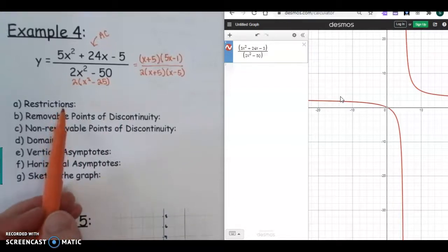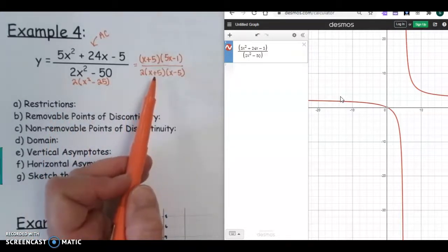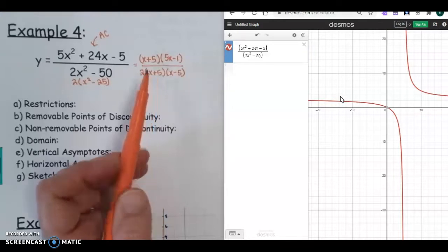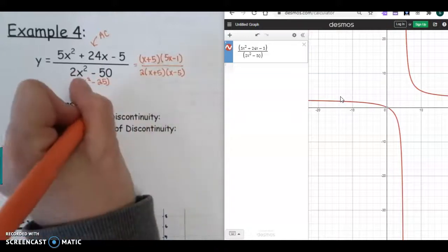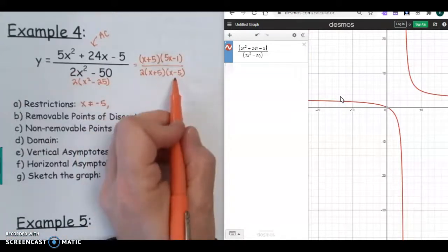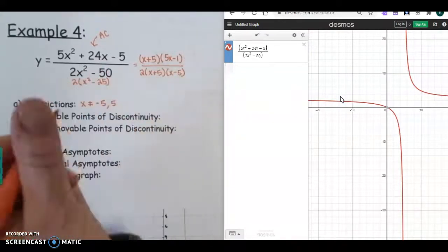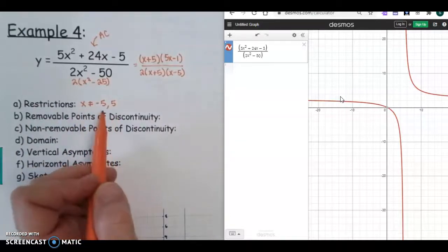We can start thinking about answering all the different questions. So it wants to know the restrictions. If we look at our denominator, I see that X could not equal negative 5, because that would make this be 0, and X could not equal positive 5. So that takes care of the restrictions.